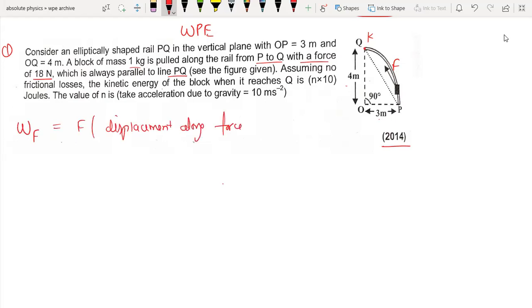Since the force is constant in magnitude and direction, the work done by the force equals force times displacement along PQ. So work by force equals F into displacement, which is 18 times 5, equals 90 joules.